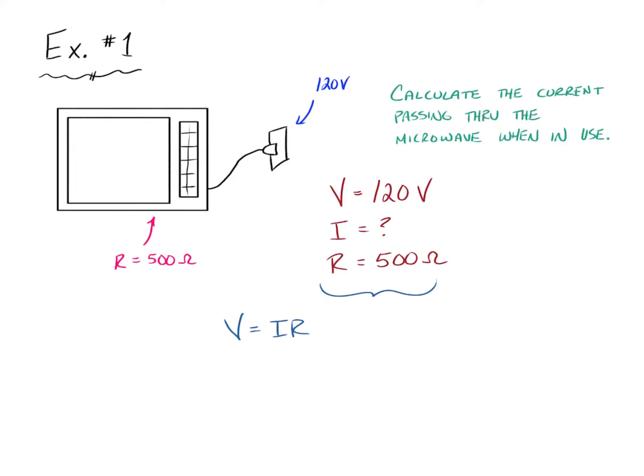So we can take those three, plug them into Ohm's Law, which of course is V equals IR. So the 120 volts must be equivalent to whatever current passes through that microwave multiplied by the resistance, which we know to be 500.